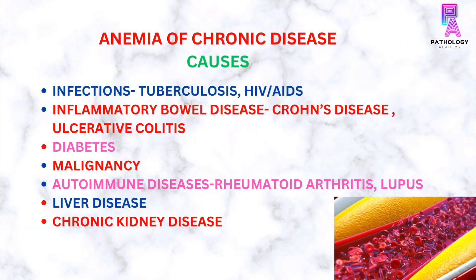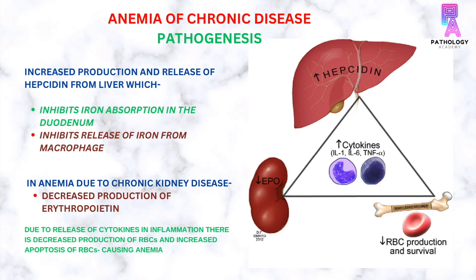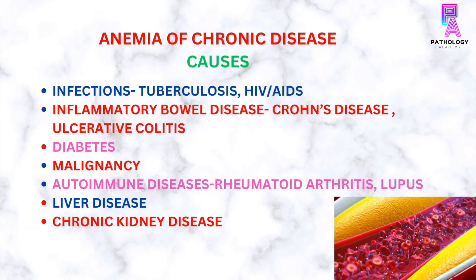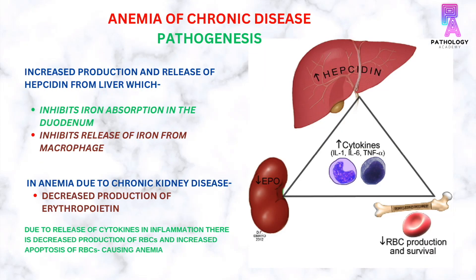The macrophage-derived cytokines like interleukin-1 beta, interleukin-6, tumor necrosis factor alpha, and interferon gamma in patients with infections, inflammatory states and cancer contribute to the decrease in erythropoietin production, which leads to impaired iron availability by increased hepatic hepcidin synthesis.